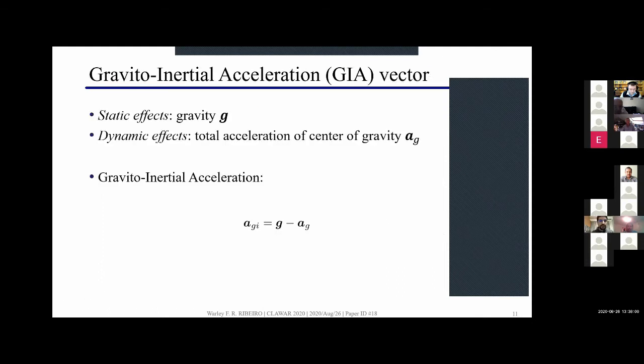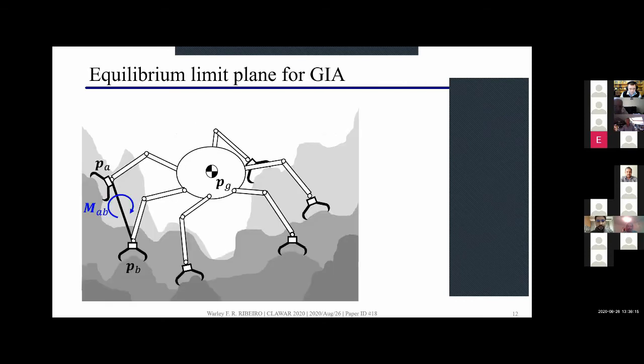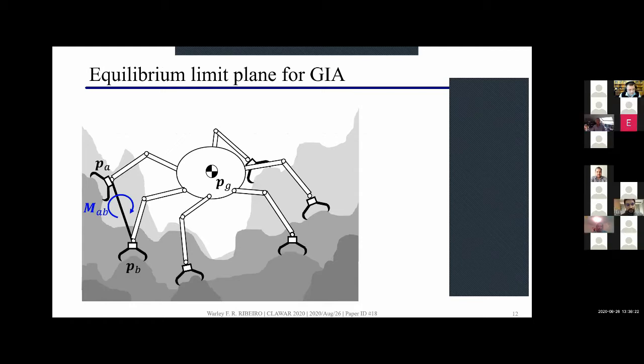Here I introduce the gravito-inertial acceleration vector, for short GIA, which includes the effects of static effects from the gravity and dynamic effects from the center of gravity. We can consider the limit for the equilibrium when the tumbling moment is equal to zero. If we introduce the GIA vector into the tumbling moment equation we can obtain this following equation in terms of the limit of this GIA vector, the robot posture based on the contact positions, total mass and holding forces.